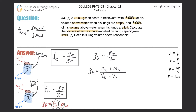Now I can start substituting. The fraction submerged when his lungs are full multiplied by the density of water — that's 1,000 kg/m³ for fresh water — equals the mass of the man's body when his lungs are empty, which is 75 kilograms, plus the mass of the air that he inhaled.